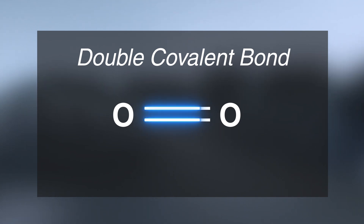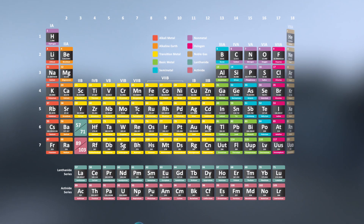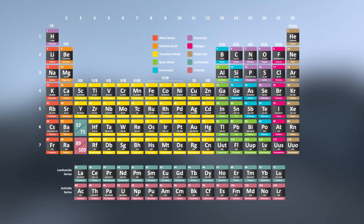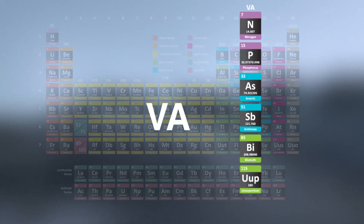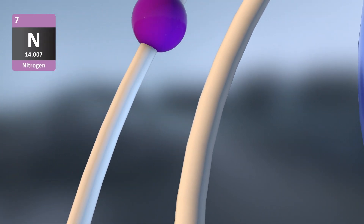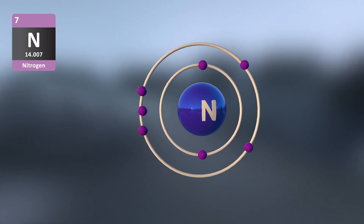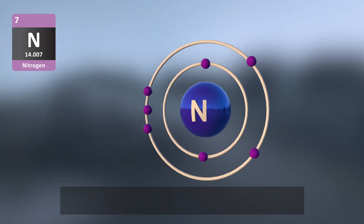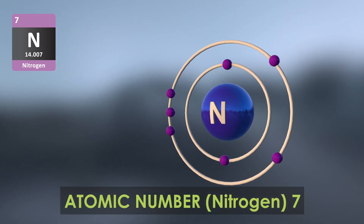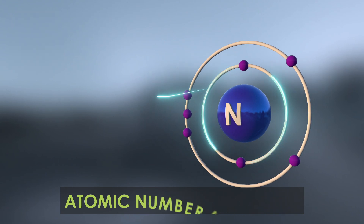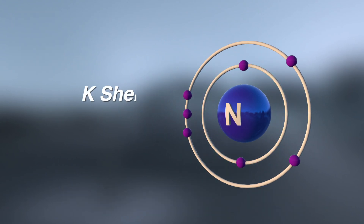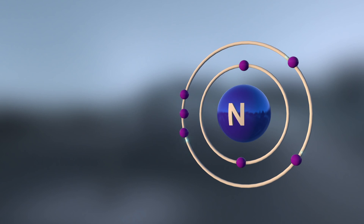Since two electrons are being shared, the bond formed is a double covalent bond. It is represented by a double line. Triple covalent bond is formed between similar atoms of group 5A. Let us consider an example of nitrogen molecule. The atomic number of nitrogen is 7. It consists of two electrons in K shell and five electrons in L shell.